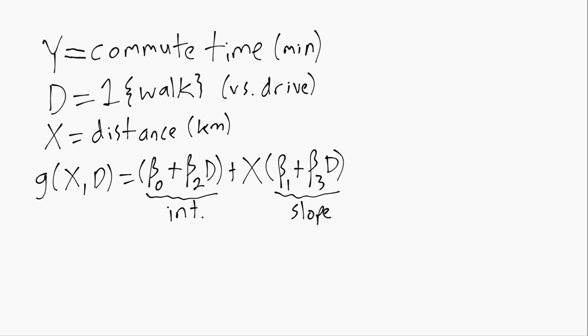To make it concrete we have this example where y is somebody's commute time, how many minutes it takes them to get from their home to work. d is a dummy variable that's equal to 1 if the person walks and 0 if they drive. We'll assume those are the only two options just for simplicity. And x is the distance from the home to the workplace in kilometers.